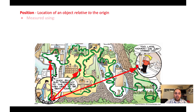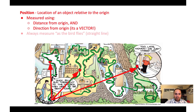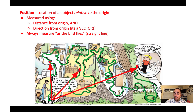We can also look at Billy's travel in regards to his different positions. Position is a vector value — it is the location of an object relative to the origin. At any given time I can pick a point, and those points are shown in red on this graphic. We describe position based on its direction and distance from the origin as the crow flies — not the path, but a straight line from the origin.